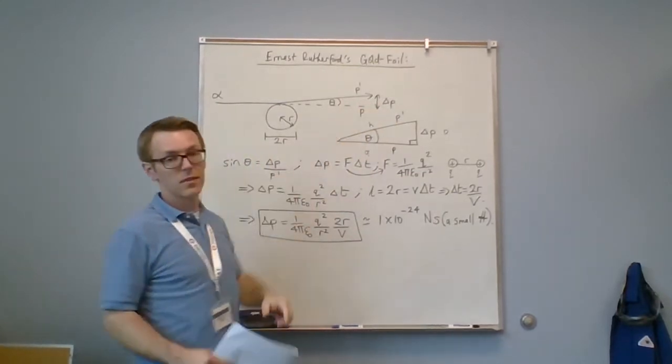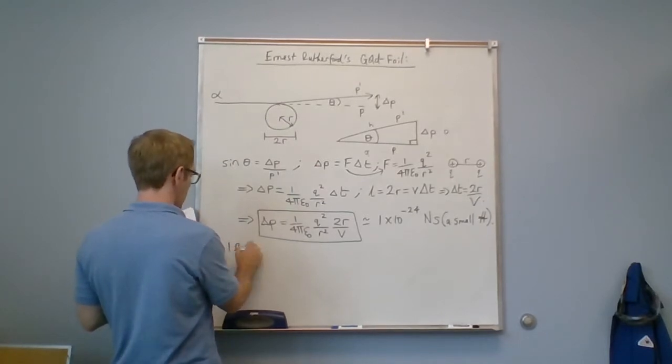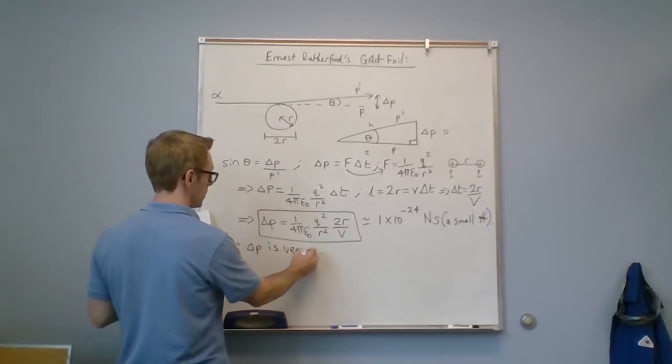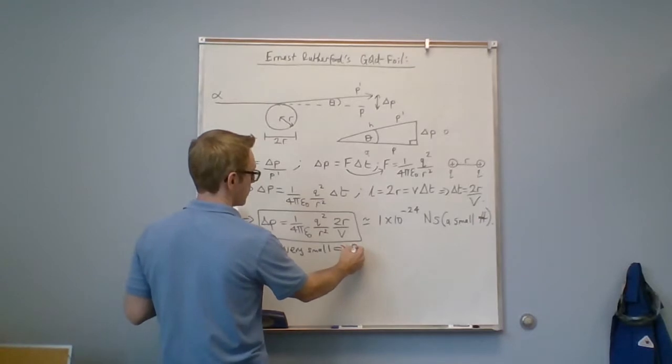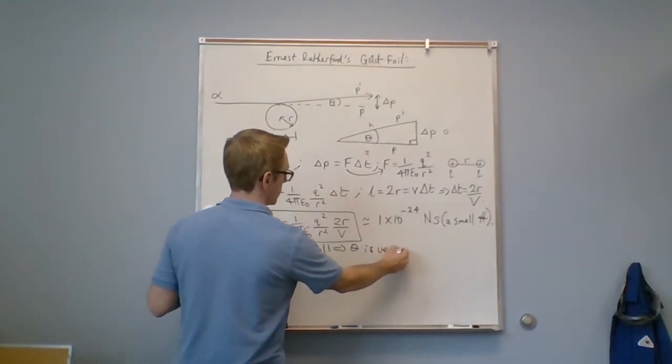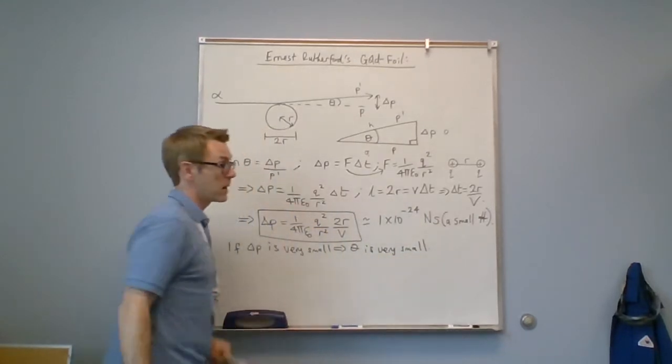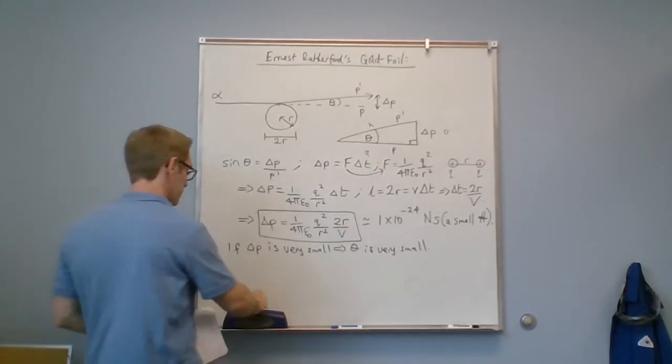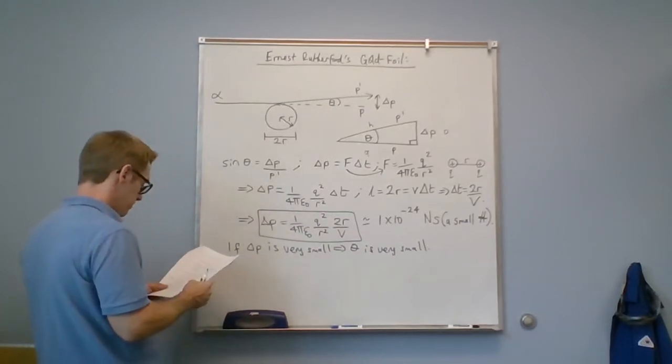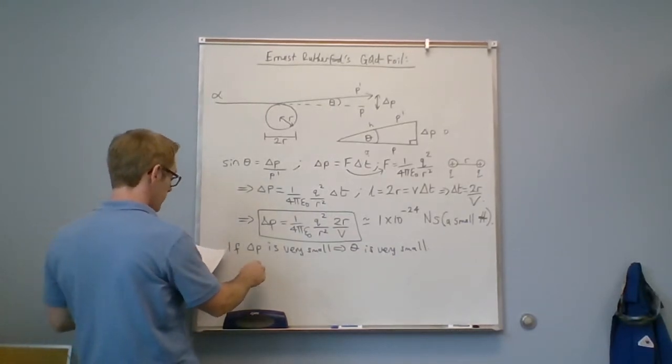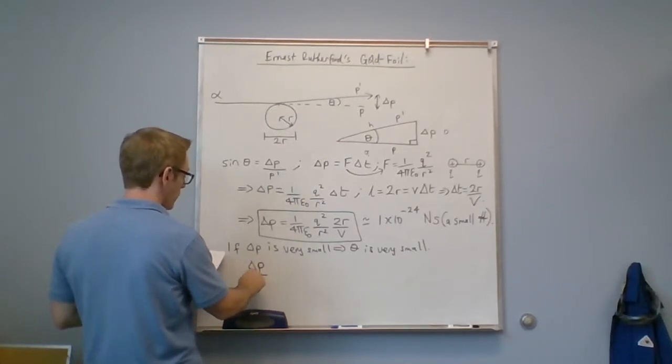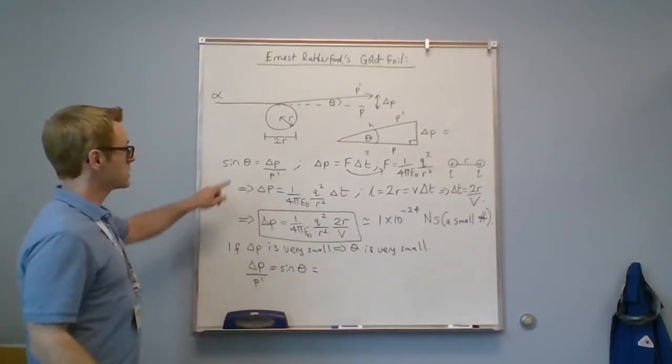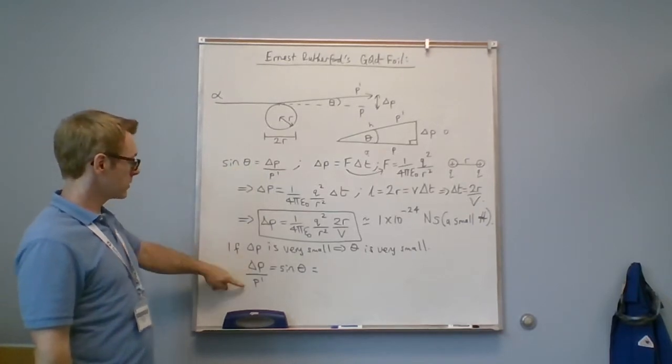By any stretch of the imagination, negative 24 is a small number. That would be 23 zeros before the first non-zero. This is delta P, so delta P is very small. If delta P is very small, the angle theta must be very small. If delta P is very small, it implies that the angle theta is very small, as expected. So Rutherford was not expecting any large deflection angles.